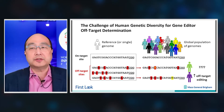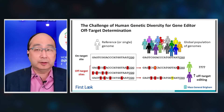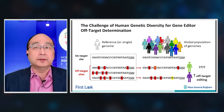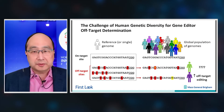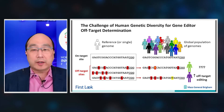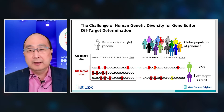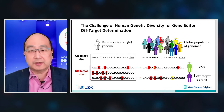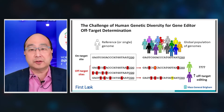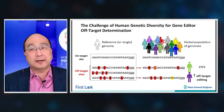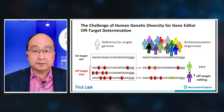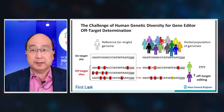The challenge comes when you start to think about applying these editors to the global population of people and their different genomes, because we all have small differences. For example, a single nucleotide polymorphism can potentially make a difference in off-target activity. A SNP at one of these positions can cause a site to go from four mismatches to only three mismatches — and recall that fewer mismatches means a higher frequency of off-target editing. So a small single-base difference in an individual can actually potentially lead to an increase in off-target editing.